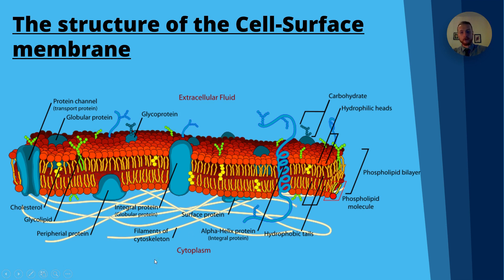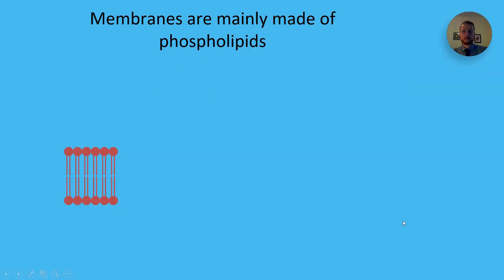At the bottom you can see the cytoplasm, which is an aqueous or liquid kind of gel, and we have the extracellular fluid, which could be tissue fluid, for example. Membranes are mainly made of phospholipids, so let's draw the structure now.